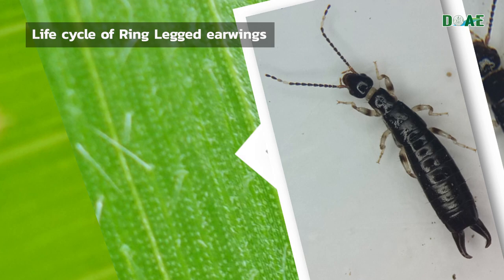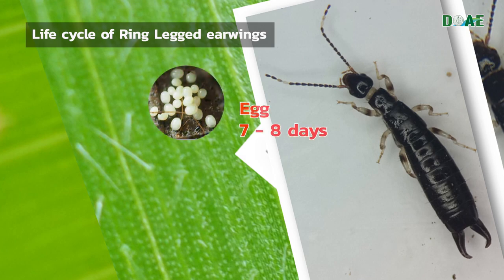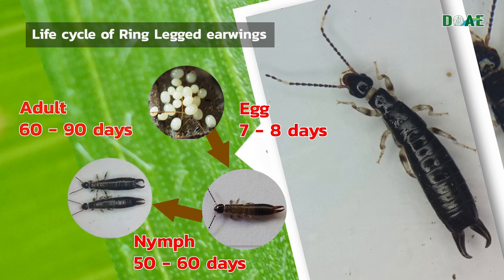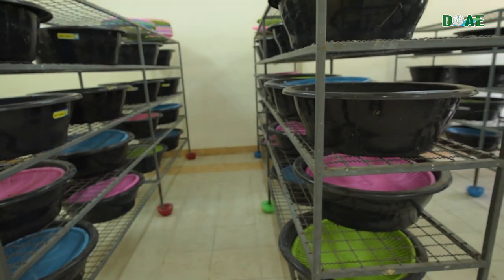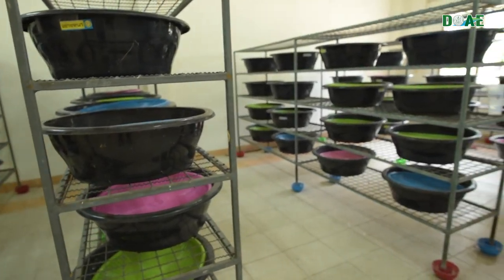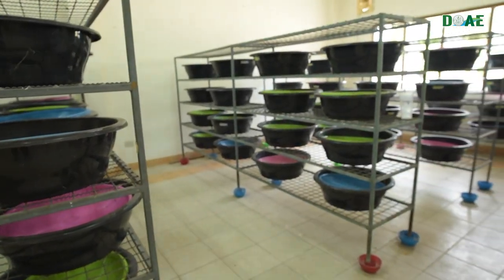Life cycle of earwigs: the egg stage takes 7 to 8 days. There are three nymph stages, which take 50 to 60 days, and the adult stage takes 60 to 90 days.